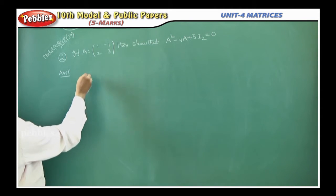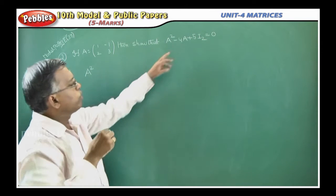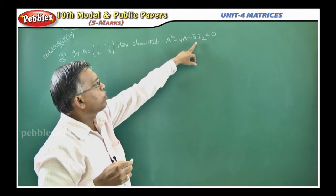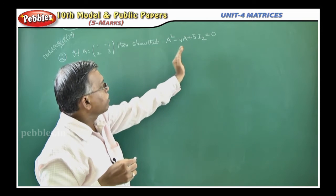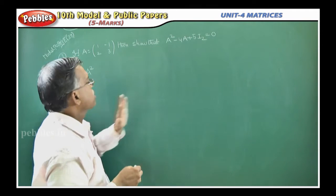First we will find A square, then we will find 4A, then we will find 5I2. If you add all the values, we will get 0 matrix, that is the meaning.